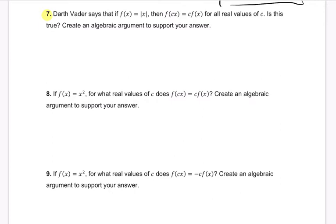But in 7, we've got Darth Vader. He says that f of x equals the absolute value of x. Then f of cx equals c times f of x for all real values of c. Is this true? Create an argument to support your answer. Is it true? No.